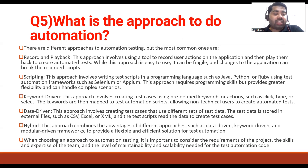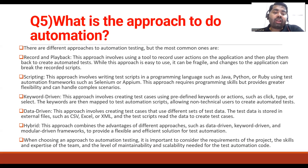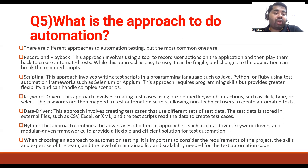The scripting approach involves writing test scripts in a programming language such as Java or Python using a test automation framework like Selenium or Appium. This requires programming skills but provides greater flexibility and can handle complex scenarios. The keyword-driven approach involves creating test cases using predefined keywords or actions such as click, type, and select, which are mapped to automation scripts — allowing non-technical users to create automation.